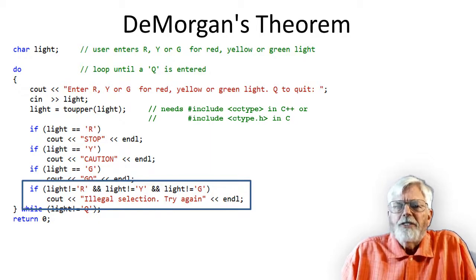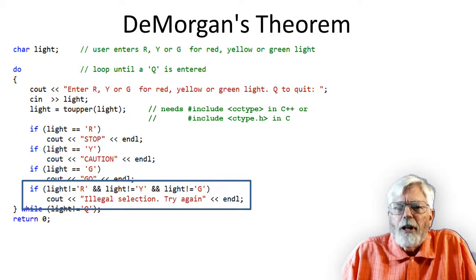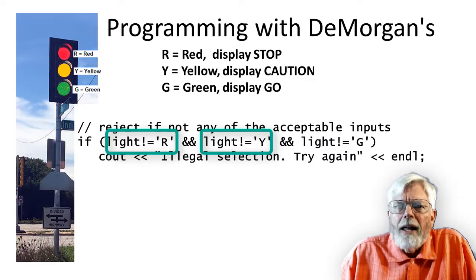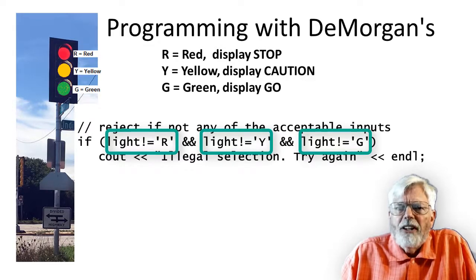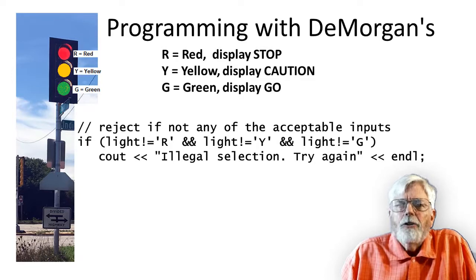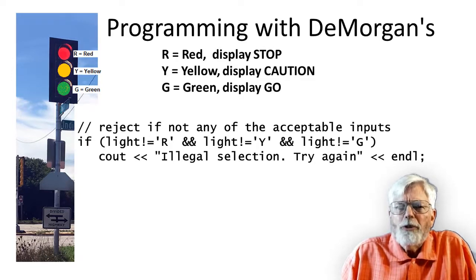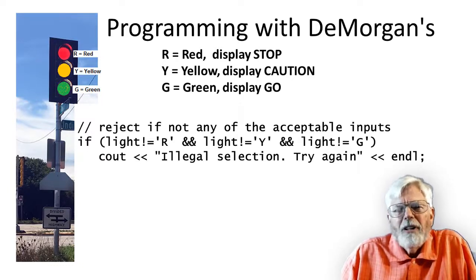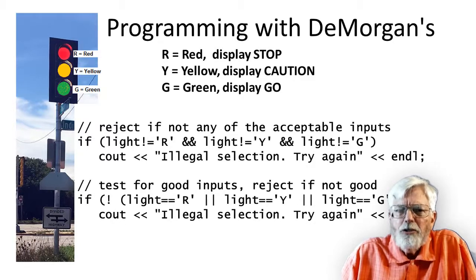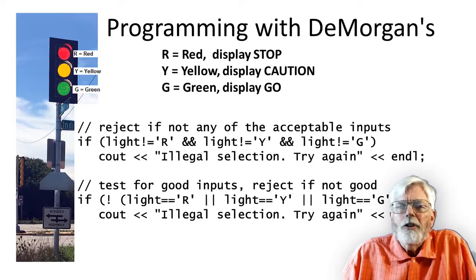Back to our program for the traffic signal. This section of code uses a single IF statement to reject illegal inputs. If the character input is not R, AND the input is not Y, AND the input is not G, then the user types something illegal. If the logical OR operator two vertical bars were used instead of the AND two ampersands, the expression inside the IF statement would always be true and an error message would always appear. Think that one over. If the user typed a Y, then LIGHT not equal to R would be true. With OR operators, if any of the selections are TRUE, then the entire expression evaluates to a TRUE. The logical expression inside the IF could use the OR operator, but the entire expression would need to be demorganized.